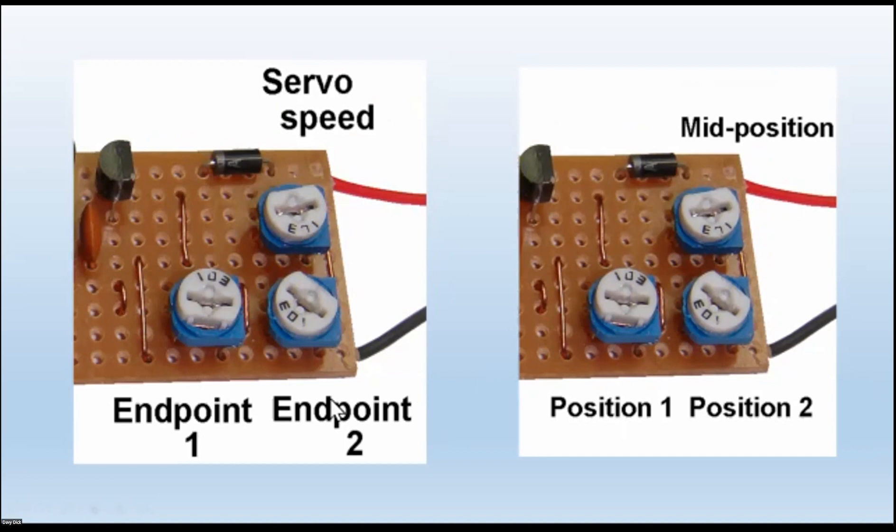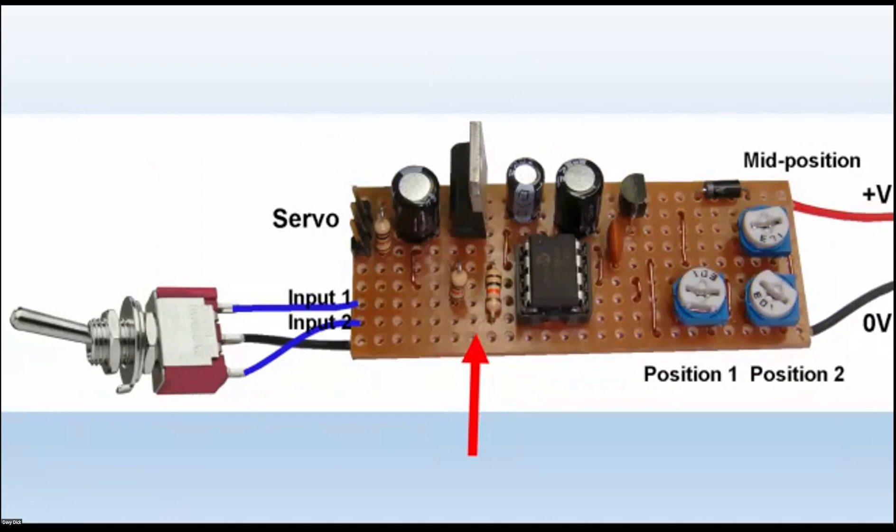So instead of having two endpoints and a speed, we have three different positions. We have to sacrifice a single preset speed, but we now can use the exact same hardware with no modification whatsoever, apart from the program itself that's on the chip.